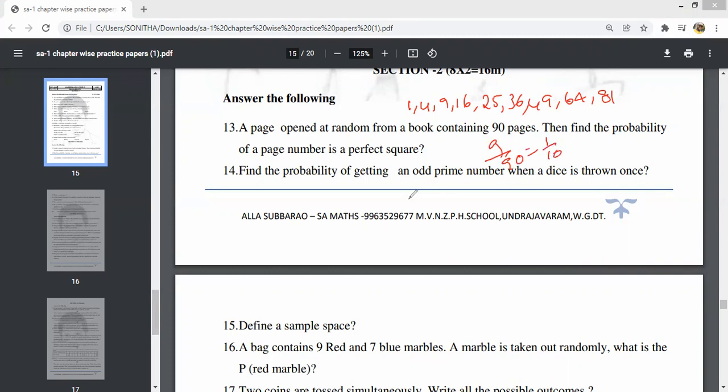Find the probability of getting an odd prime number when the die is thrown once. The possible outcomes are 6. The odd prime numbers are 3 and 5, so 2 out of 6, which cancels to 1 by 3.